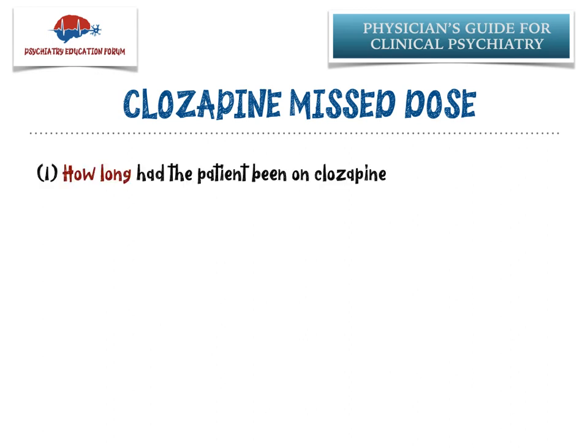The first thing I look into is how long my patient has been stable on clozapine before they missed their doses. Because a patient recently started on clozapine a few weeks ago is very different from someone who has been stable on clozapine for three years. The difference lies in the rate of titration — for somebody new on clozapine, I will be very slow and cautious with titration. That's number one.